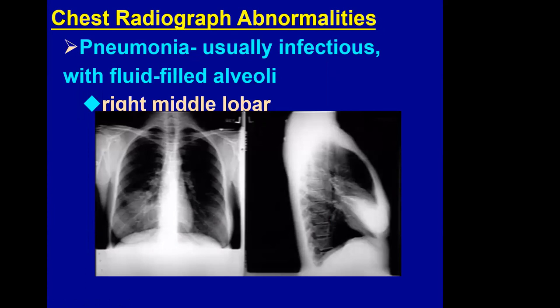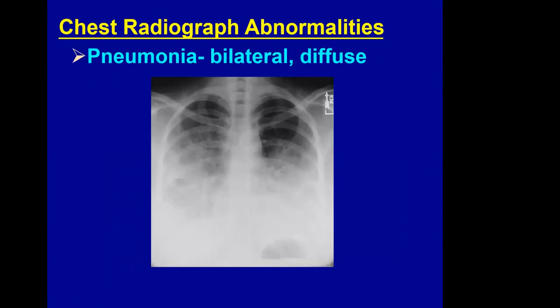Pneumonia on a radiograph is usually infectious with fluid-filled alveoli. This example is a right middle lobe pneumonia, seen first on what appears to be a PA film and then on the lateral view. The wedge shape of the right middle lobe is clearly seen. Pneumonia can also be bilateral and diffuse, as in this picture of a patient with severe bilateral pneumonia where the alveoli are filled with fluid.